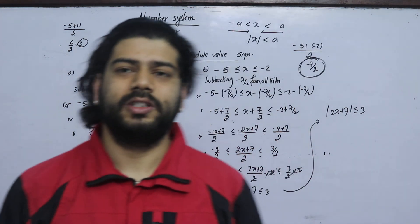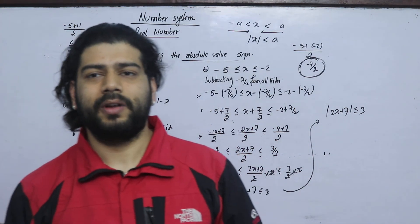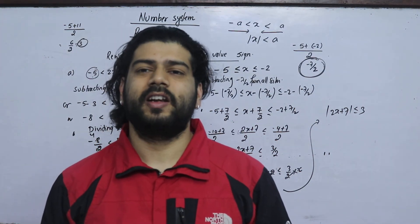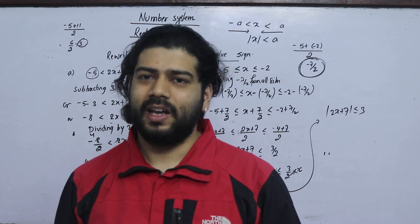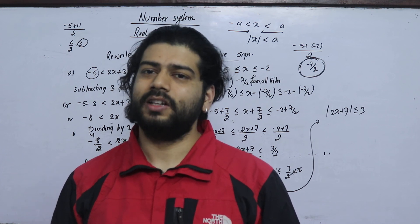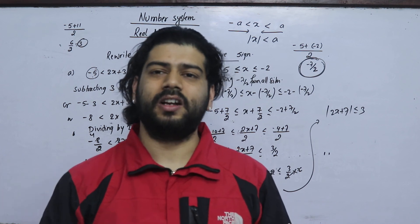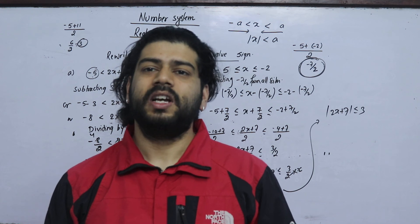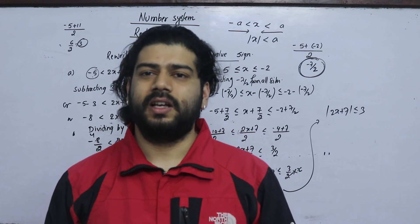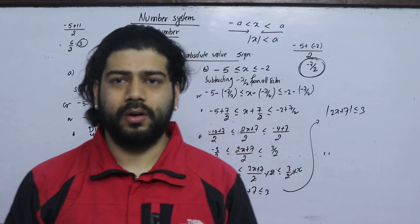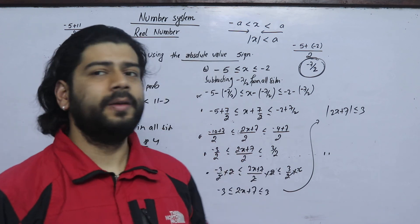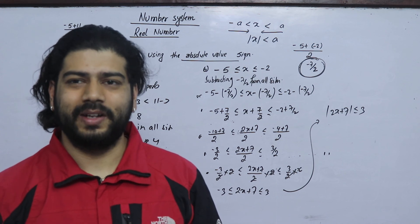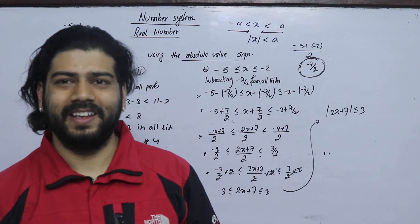The same number is positive and negative. If you add the same number, divide by 2, then you can divide by the same number. It is equal to the same number. I will solve this question. I will solve the next question. Thank you.